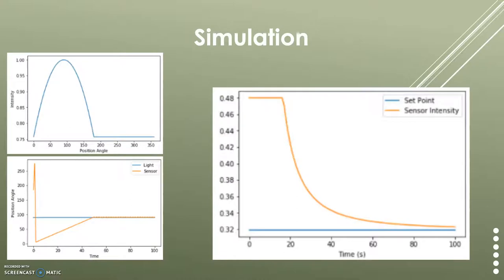When it comes to the simulation, this graph in the upper left corner is showing our modeling of the light intensity. We assumed that anything within 180 degrees of the light source, the light source being at the peak, could be seen by the sensor and you would try to maximize up to that point.